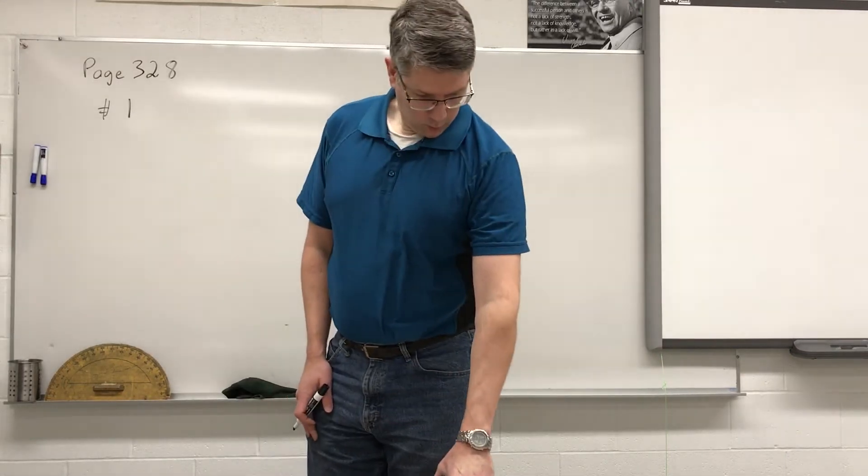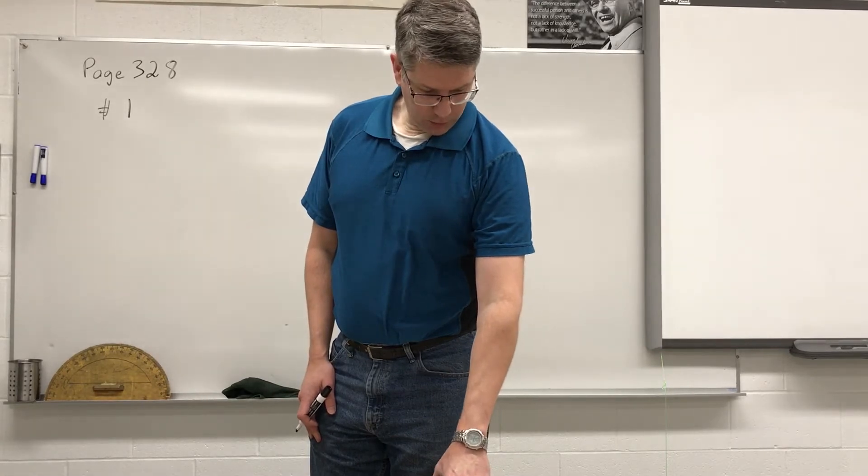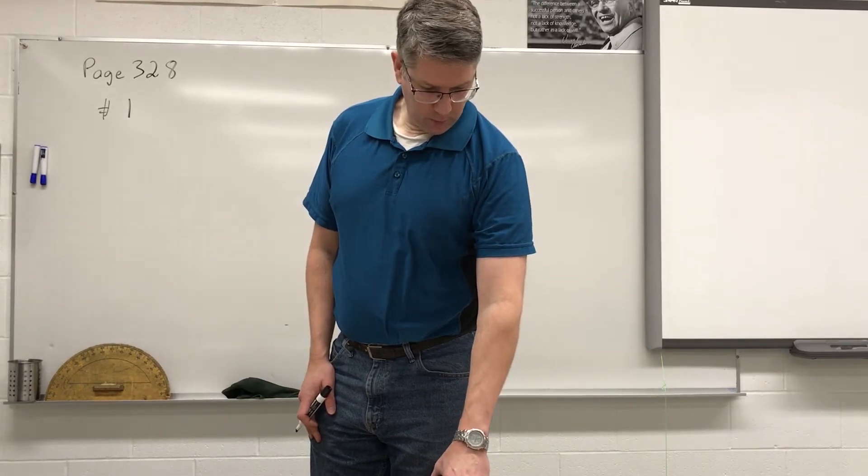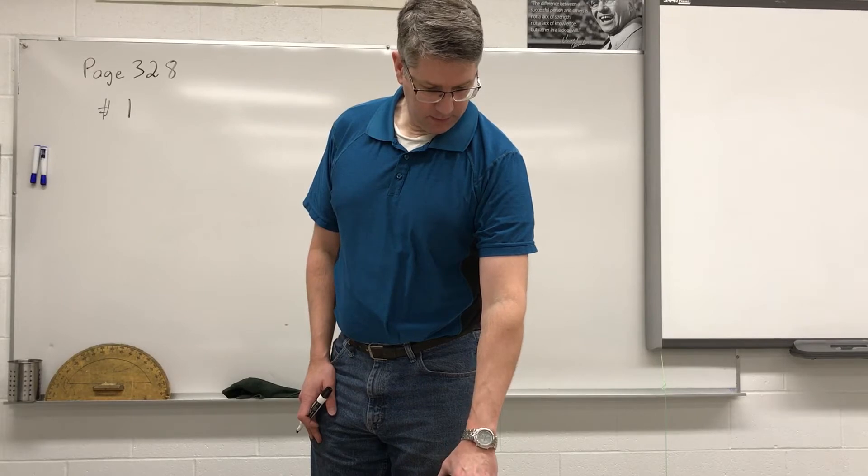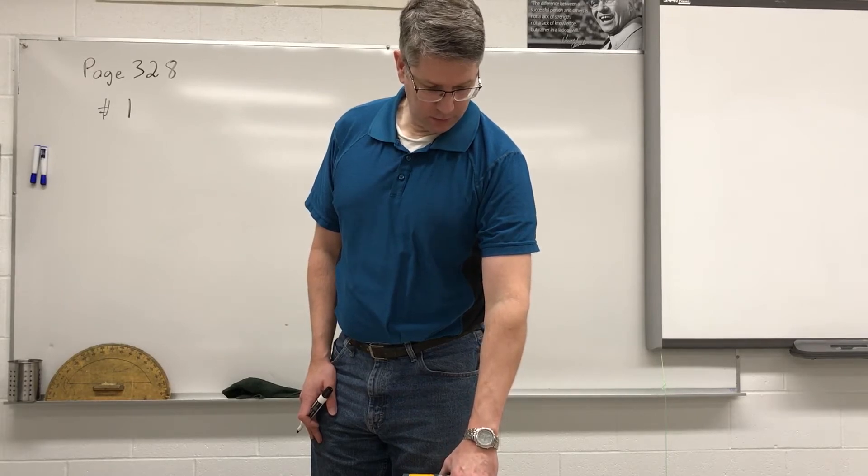Page 328, practice problem number one. What is the power output of an electric motor that lifts an elevator with a mass of 1,500 kilograms at a speed of 0.750 meters per second?